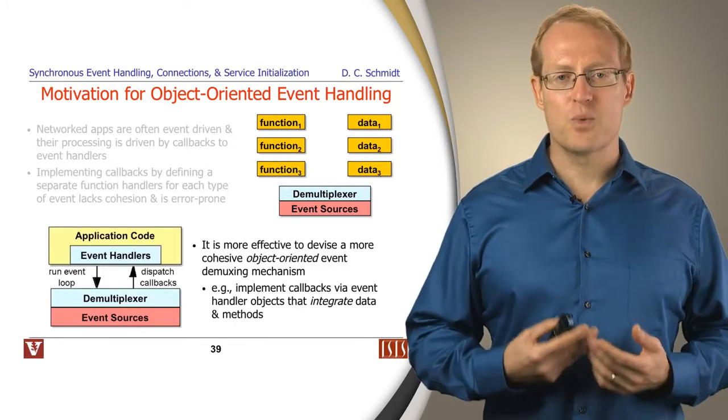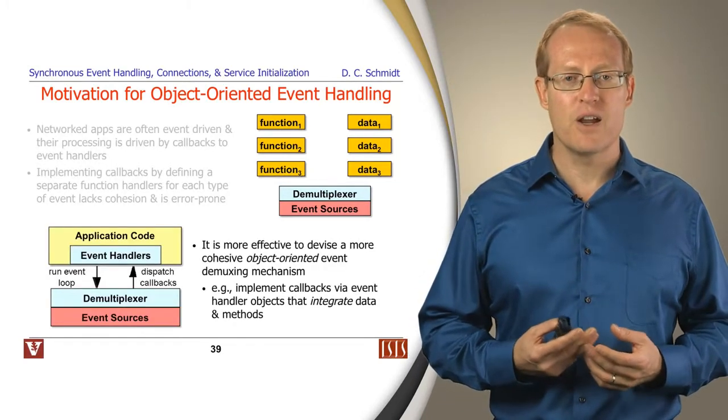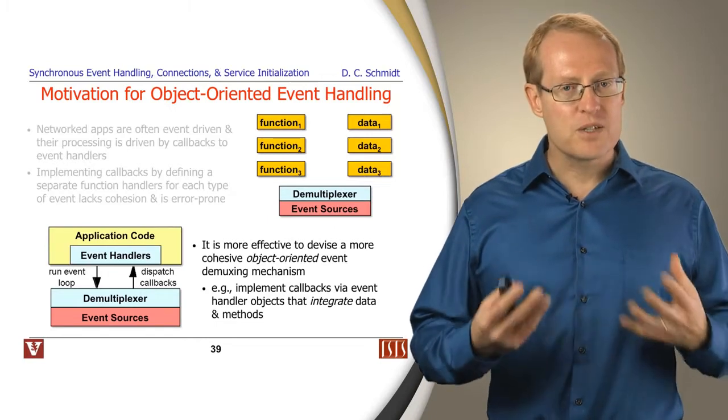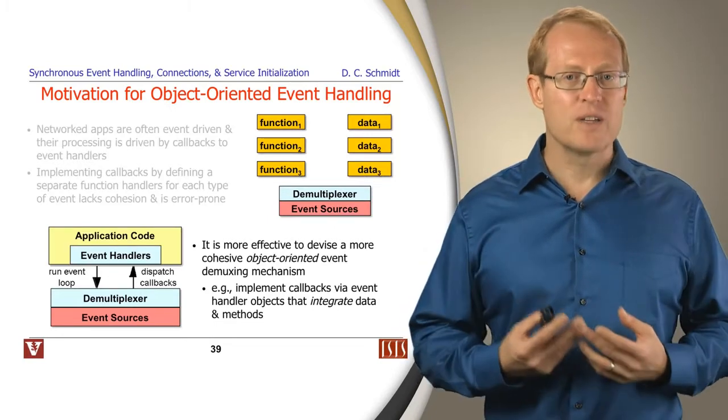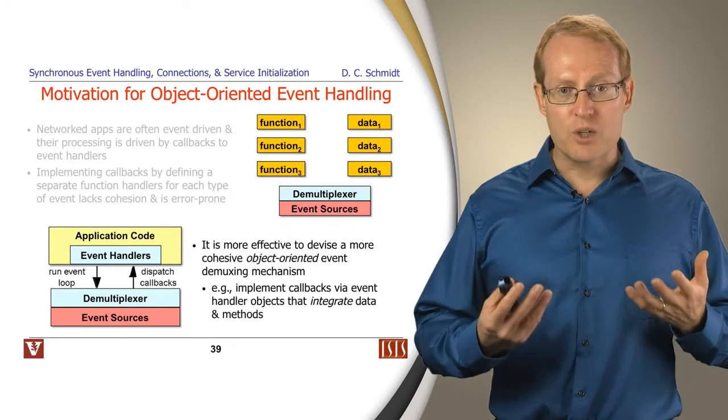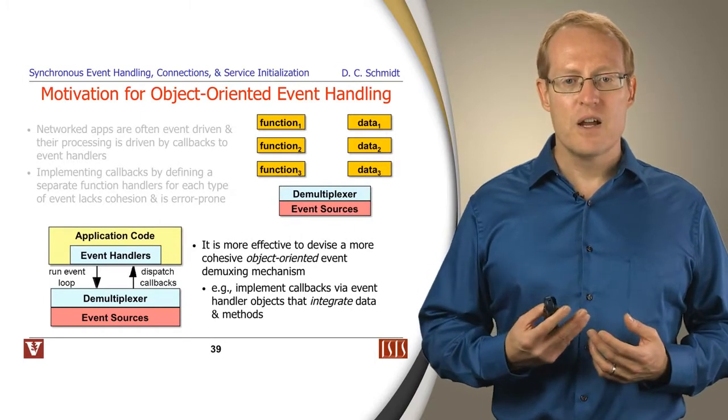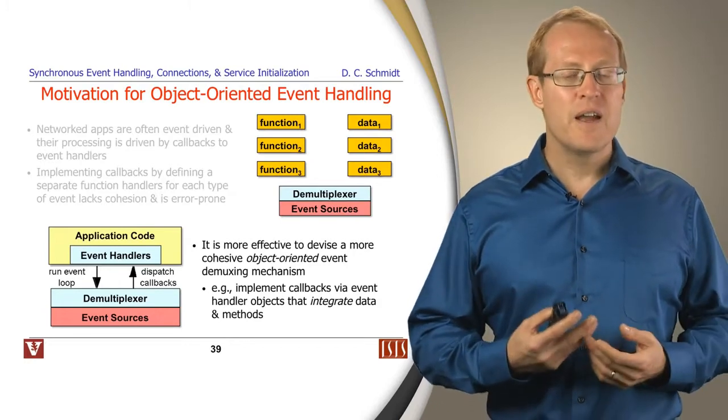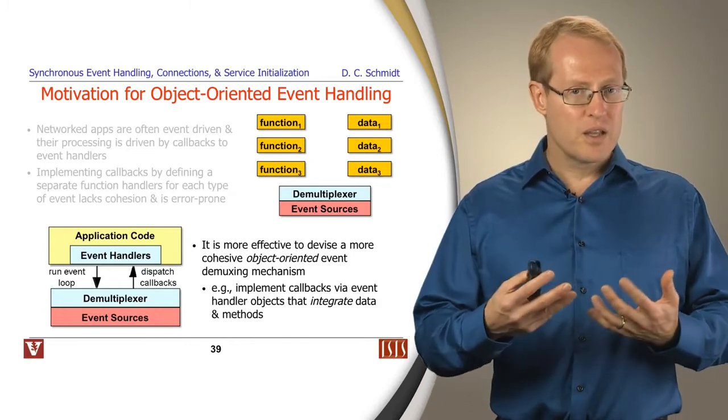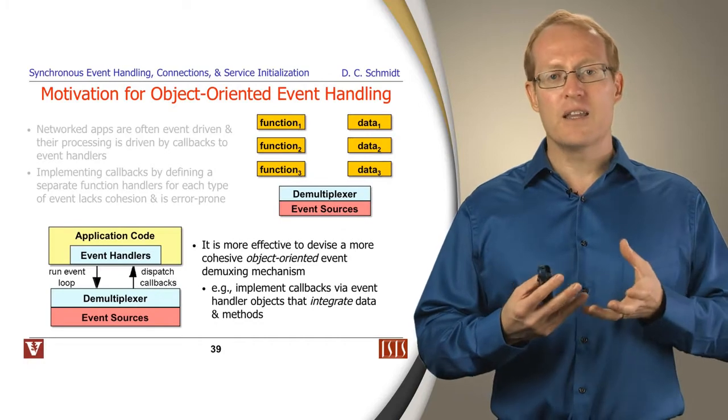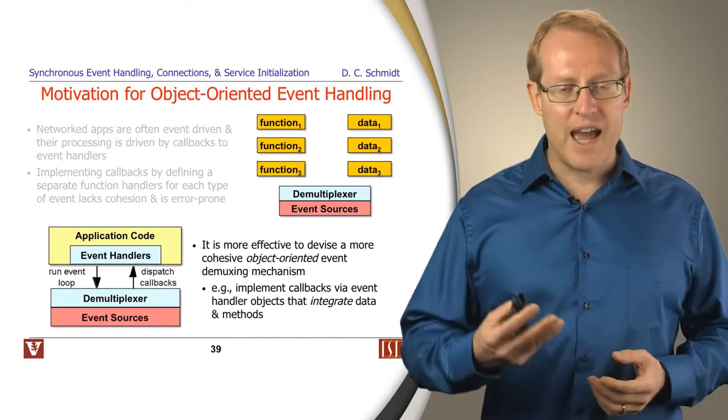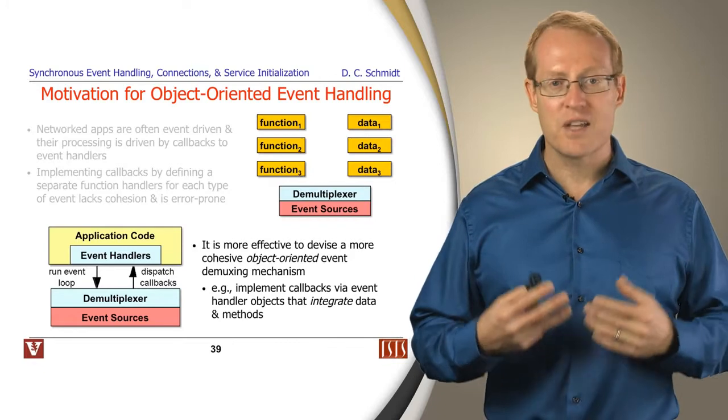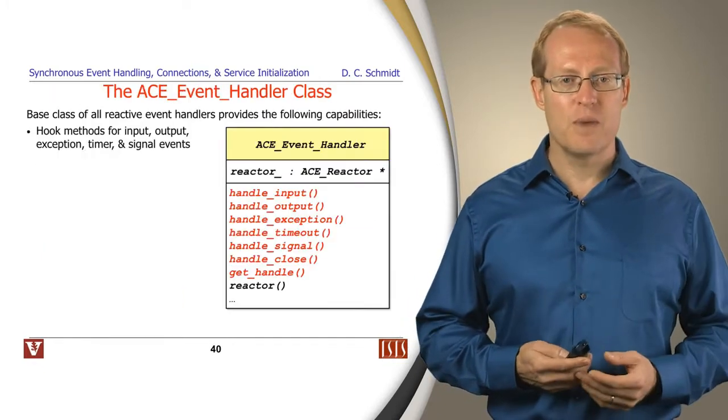In contrast with the reactive-based approach we're talking about here, we can more cohesively associate the data and the functions that operate on that data through the use of an object-oriented event demultiplexing interface. So what we'll have is an event handler base class that you can subclass, and then you can have your state associated in the subclass, and then the various methods that you override can access that state. And it's all much more cohesive and localized and easier to understand, easier to maintain.